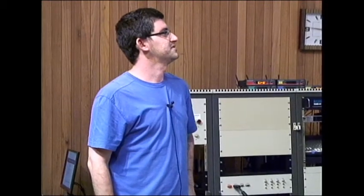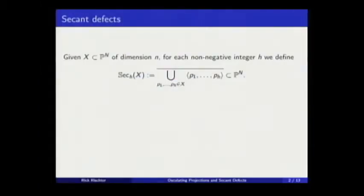First I will explain what these secant defects are. The secant variety of a projective variety X is the union of several linear spaces intersecting X. The h-th secant variety of X, to construct you take h points of X, make the h minus one plane passing through them, then vary for all the choices of h points, make the union, take the closure. This is the secant variety.